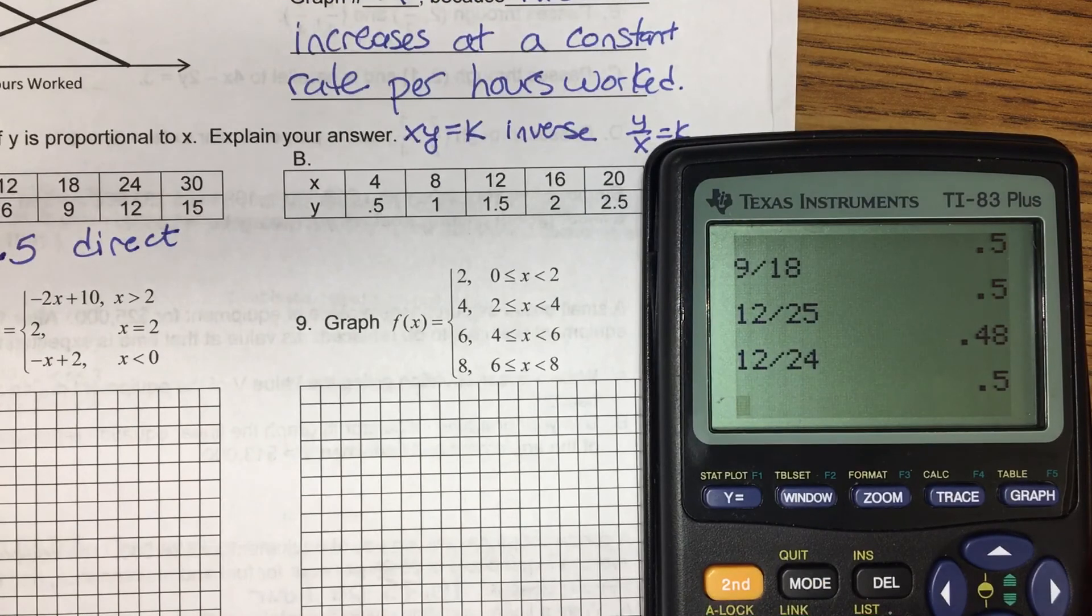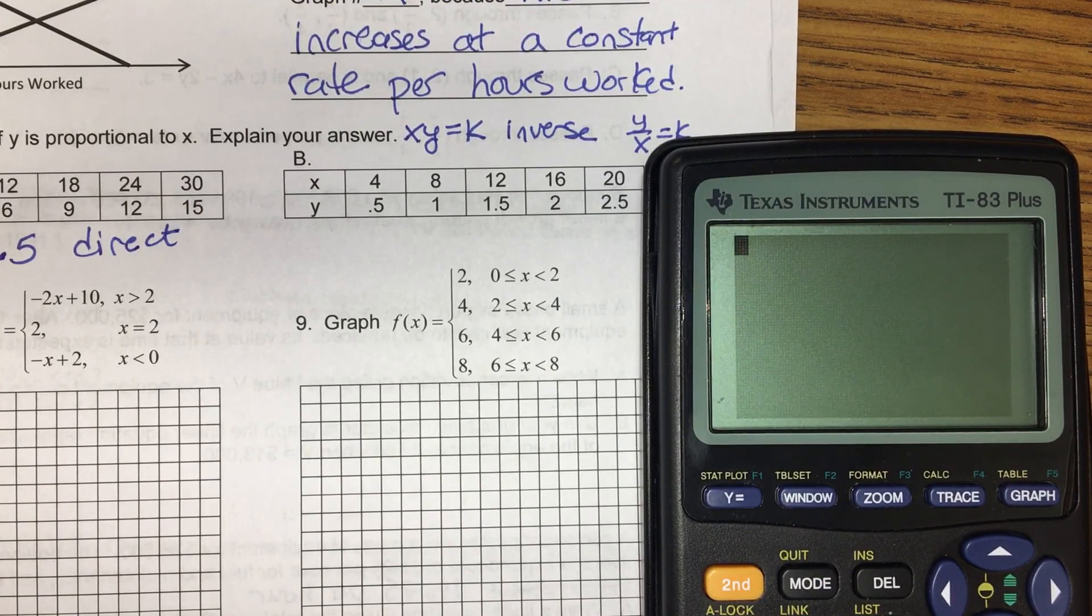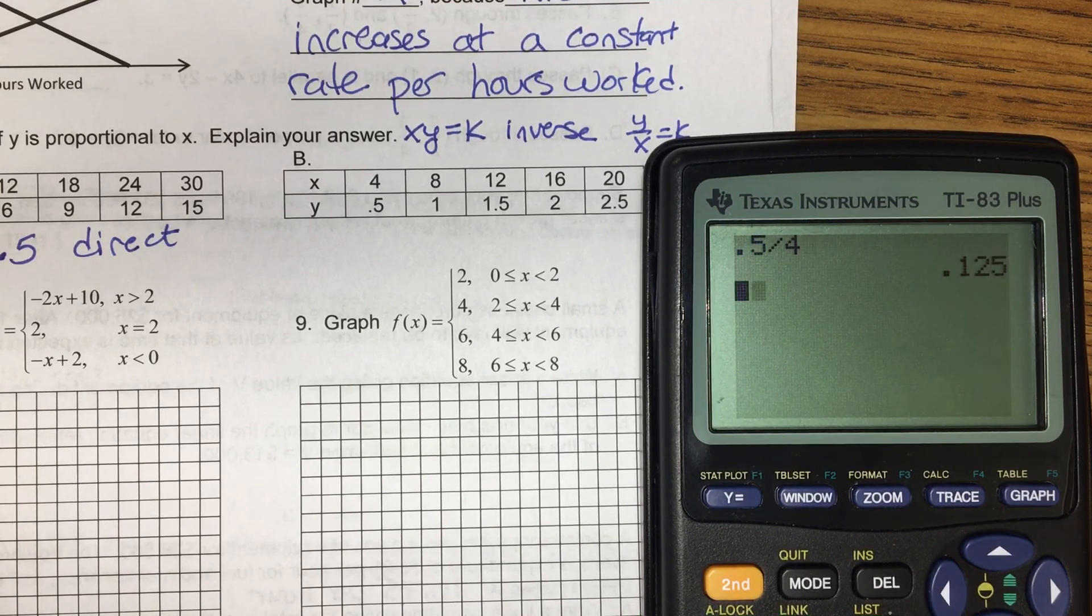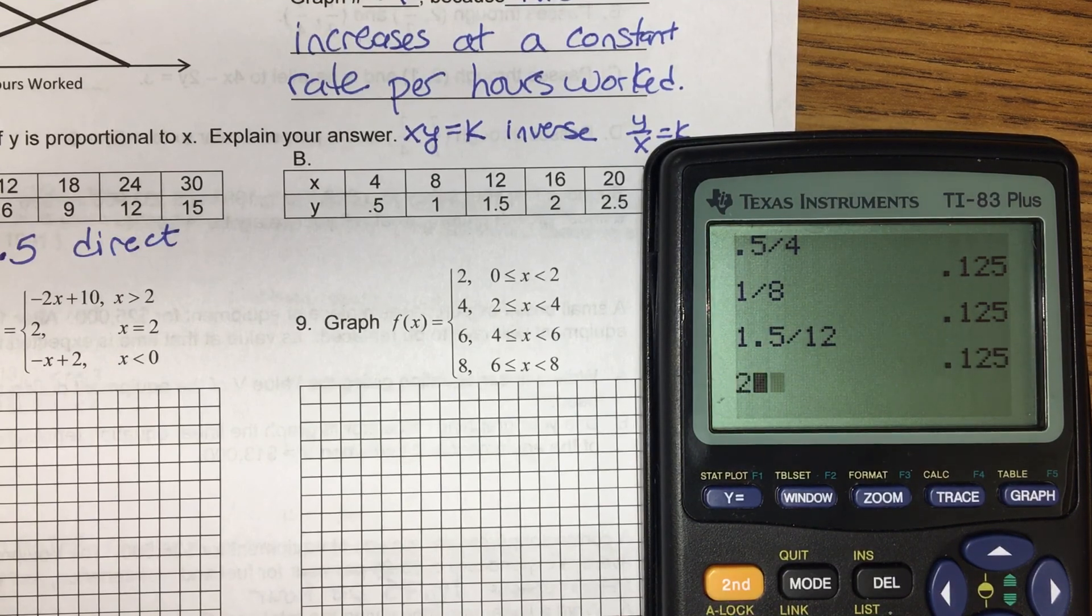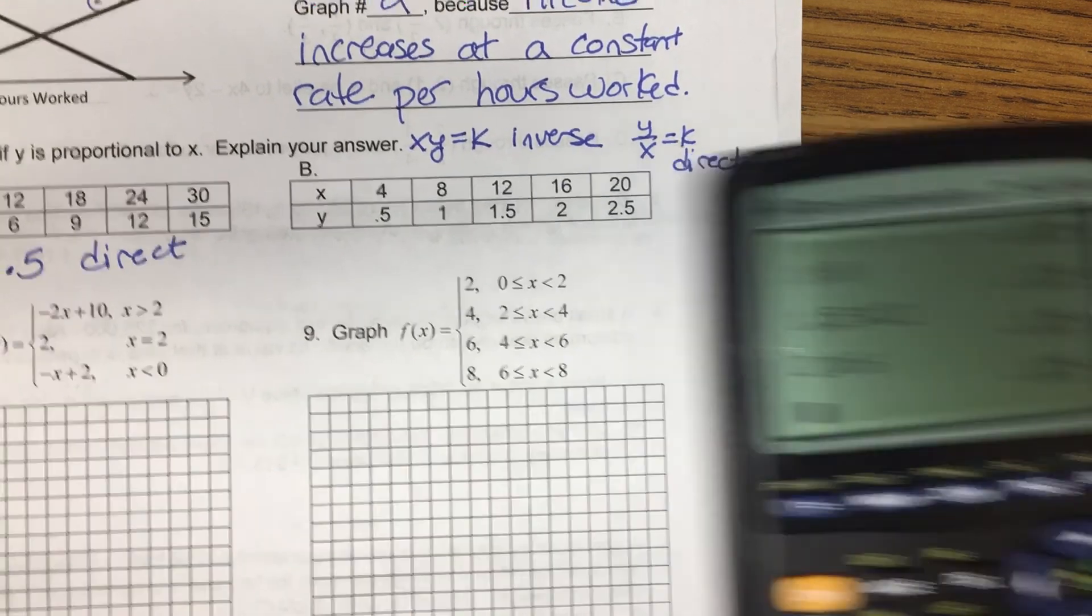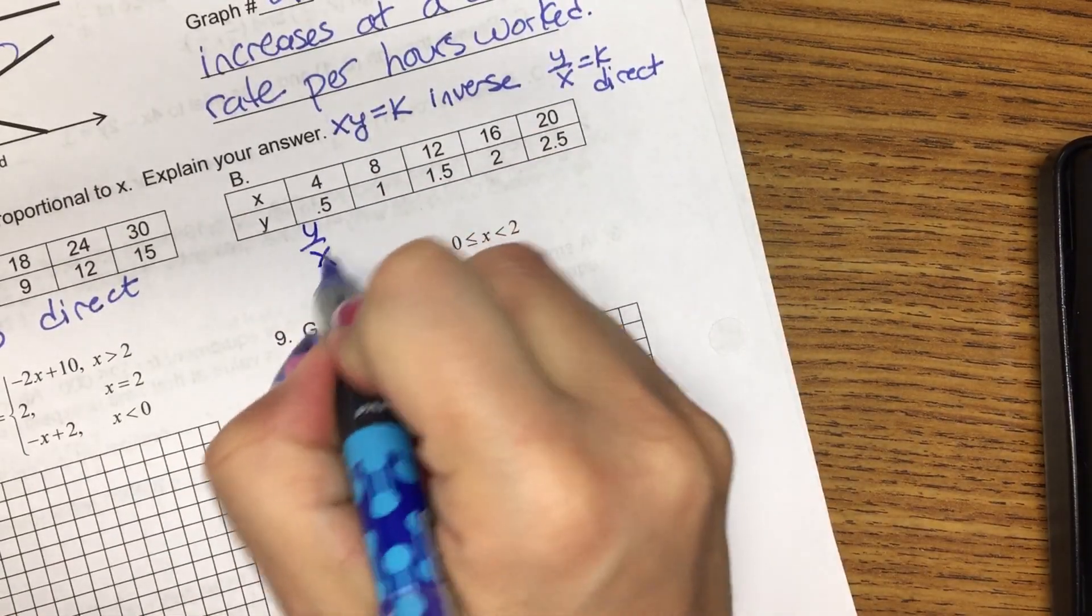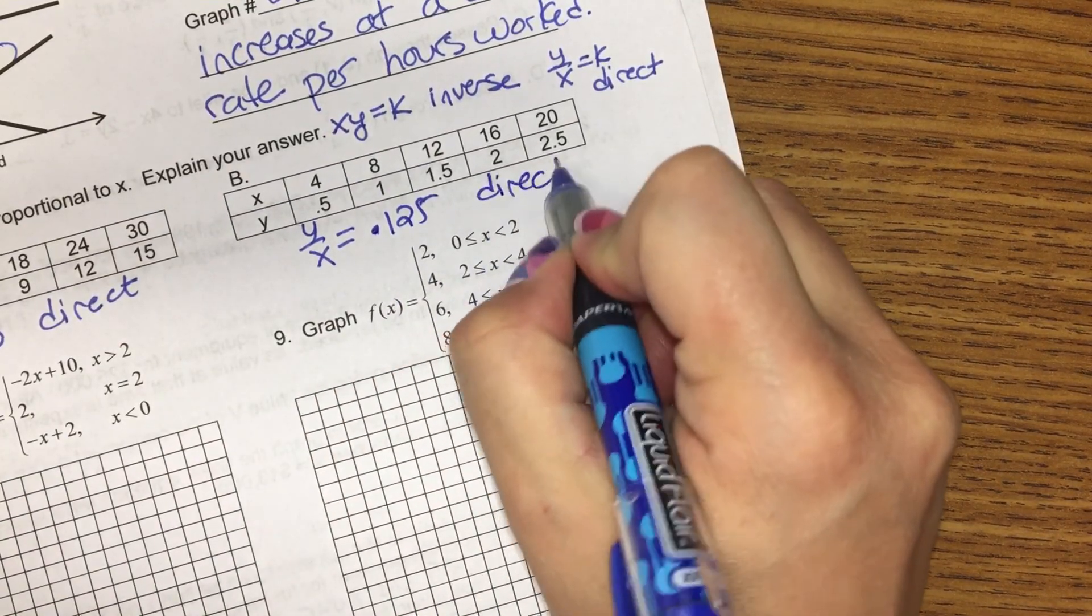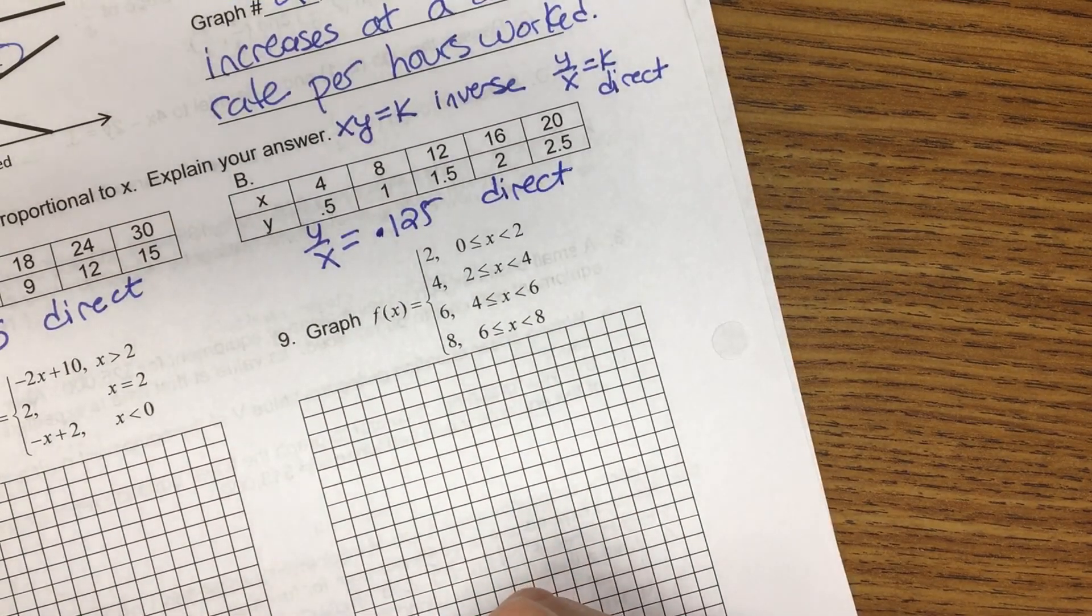Let's try multiplying. Multiplying for b, since we already used direct, maybe this one will be inverse. 4 times 0.5, 8 times 1. Uh-oh, those are different. Not the same. So it is not inverse. Let's try division. Oh, look, they're all coming up the same decimals. So again, y over x, what was that decimal? 0.125. So again, it was direct.